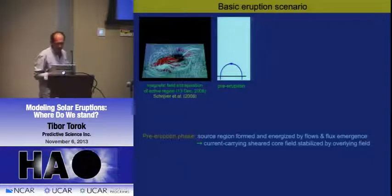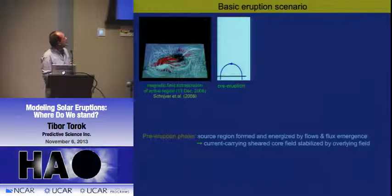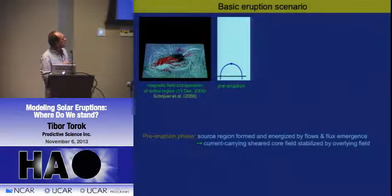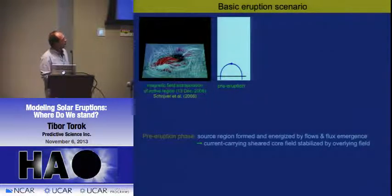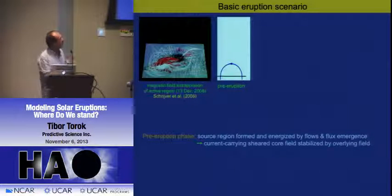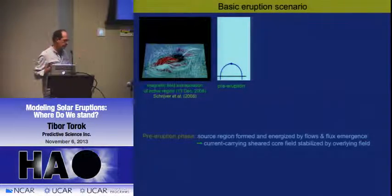If you put this all together, you get the basic eruption scenario. Prior to an eruption, you have a source region energized by flows and flux emergence. You get sheared and twisted current-carrying fields that store the energy. Those current-carrying fields typically want to expand, and they are held down by the ambient field surrounding them, which is essentially a potential field—a stable equilibrium situation.